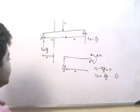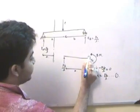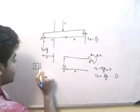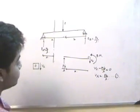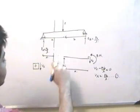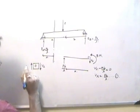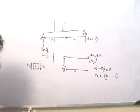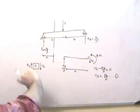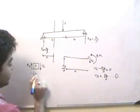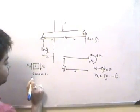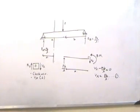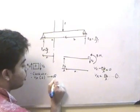Now, what about the sign convention? If I take an element O and draw it, then Vx will act on the right side of element O, and the resultant force acting on the left portion of the beam will act here — denoted as RF Vx. This will have a tendency to rotate the element in a clockwise direction. So condition one: clockwise rotation, and condition two: Vx is downward. If these two conditions are satisfied, we say that the shear force is positive.